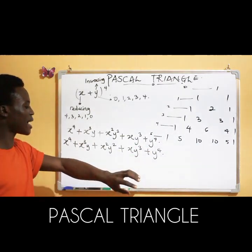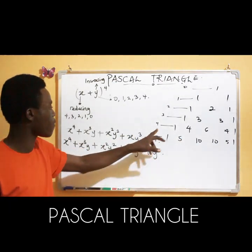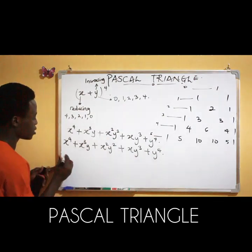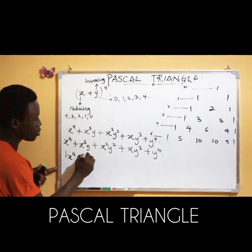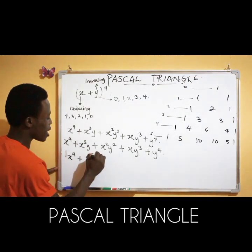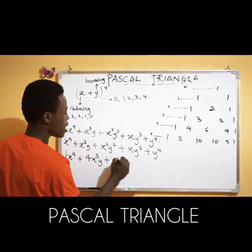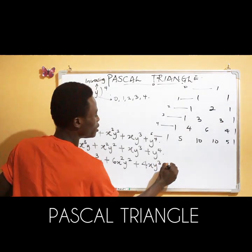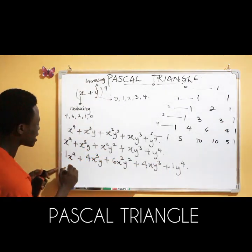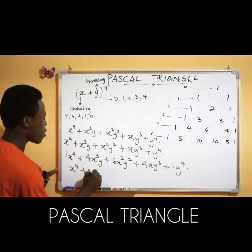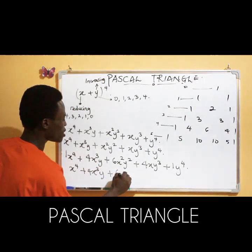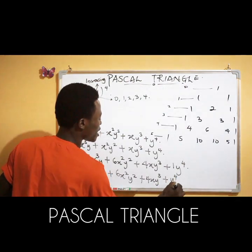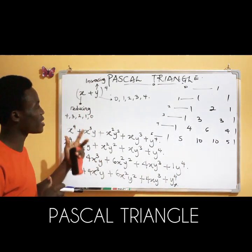Now these values need coefficients. Since we are dealing with level four, the coefficients from Pascal's Triangle are: 1, 4, 6, 4, 1. Including those coefficients, the full expansion is: x⁴ + 4x³y + 6x²y² + 4xy³ + y⁴. That is the final answer for (x + y)⁴.